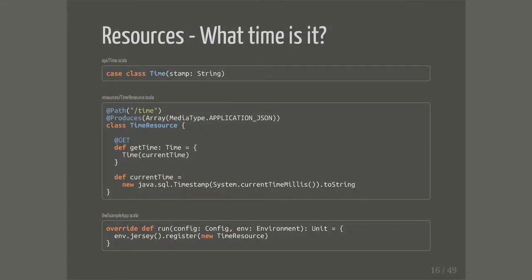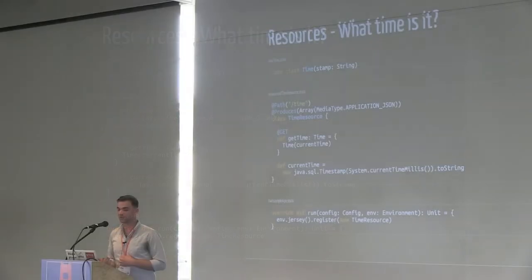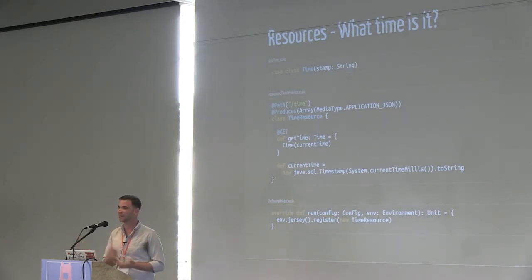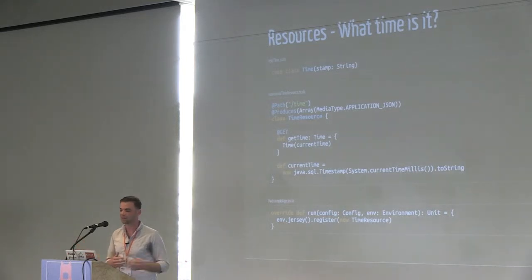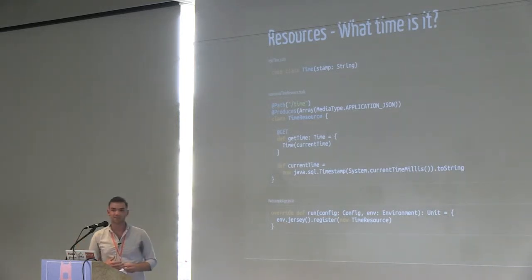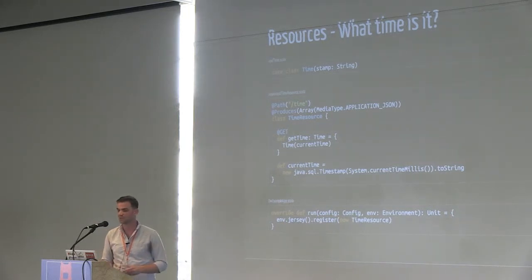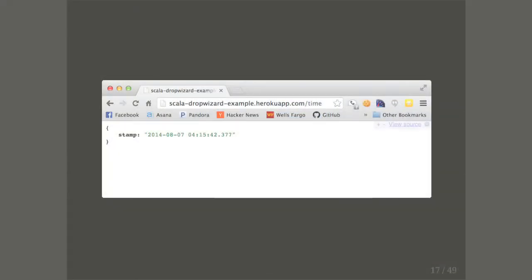Here's a little bit more complicated example — still really simple. If we're actually building APIs, we're not just passing text around. What's really nice is DropWizard already sets up Jackson for you, so it can serialize case classes back and forth from the server. So if you want to just return a time object from your class, it automatically serializes for you — nice, simple JSON.